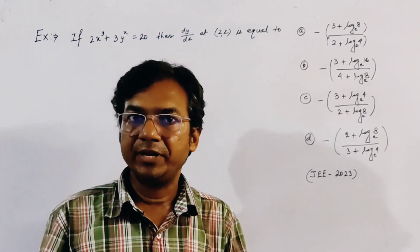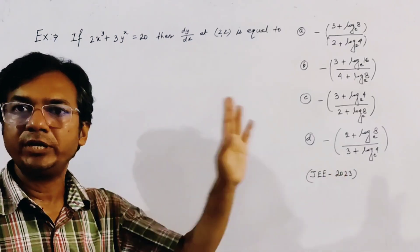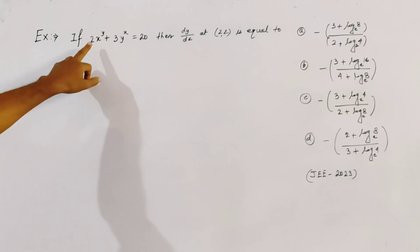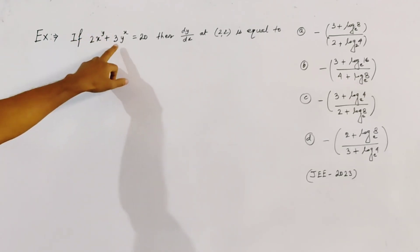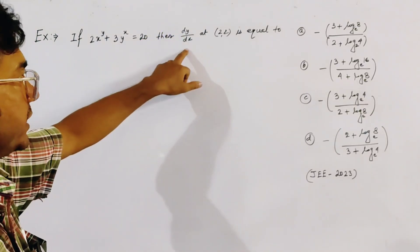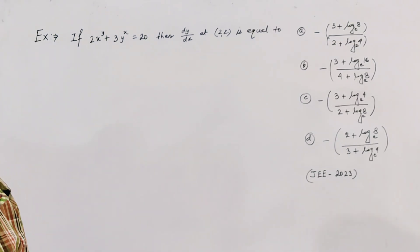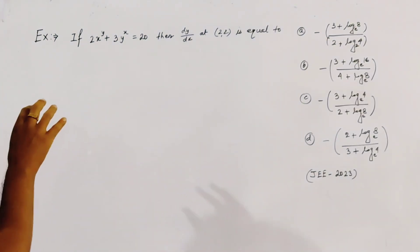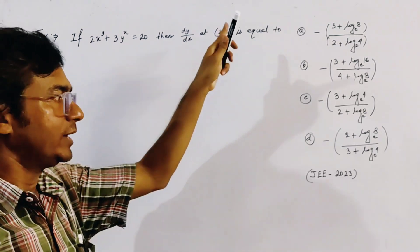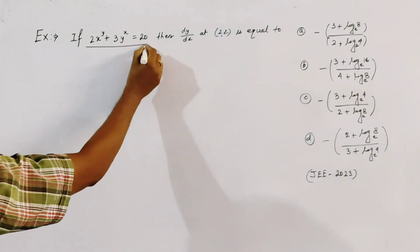This is a derivative problem from JEE Main 2023. The problem states: if 2·x^y + 3·y^x = 20, then find dy/dx at the point (2, 2). Options are given. We have to find the derivative dy/dx at the point (2, 2) and choose the correct option.